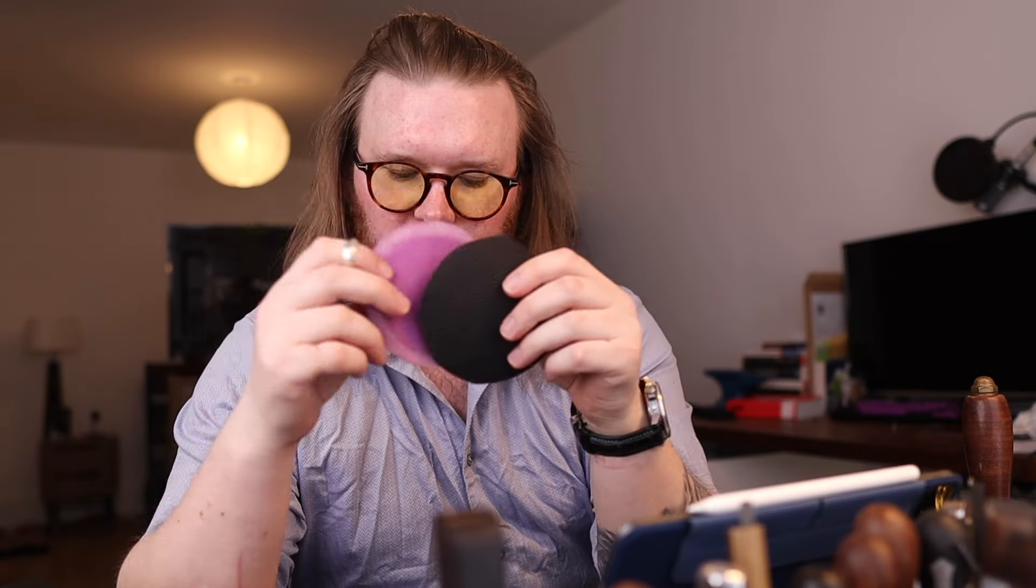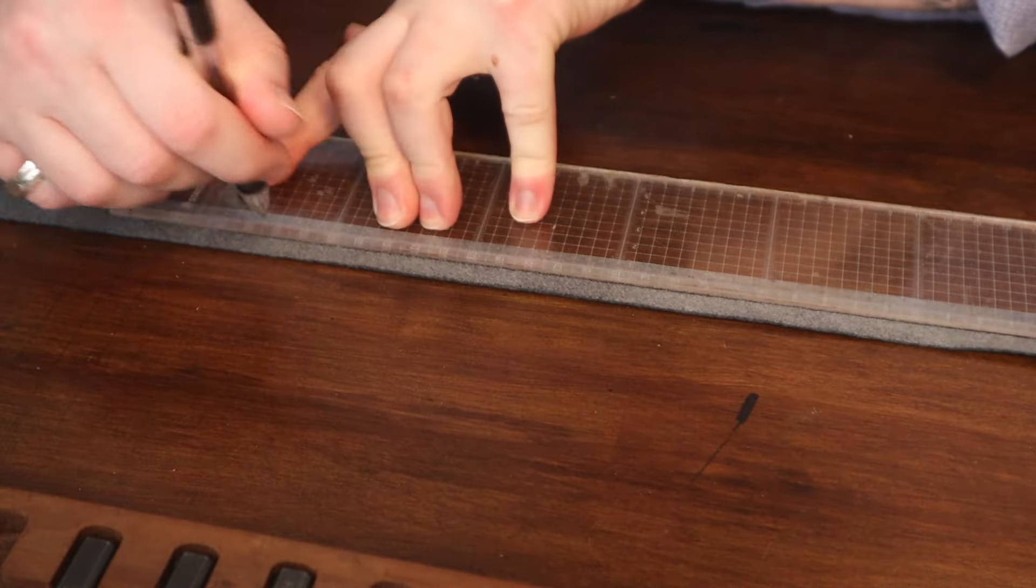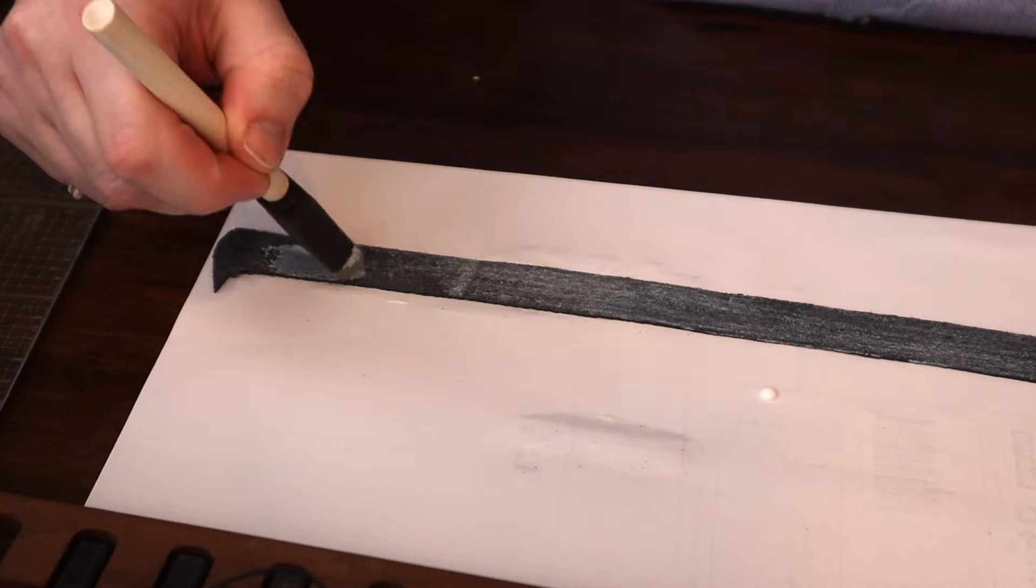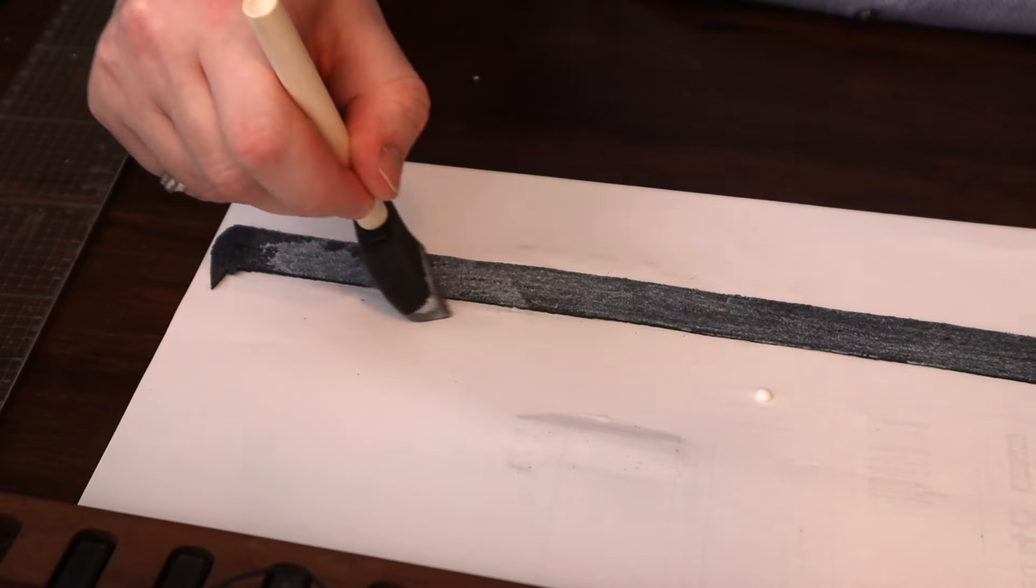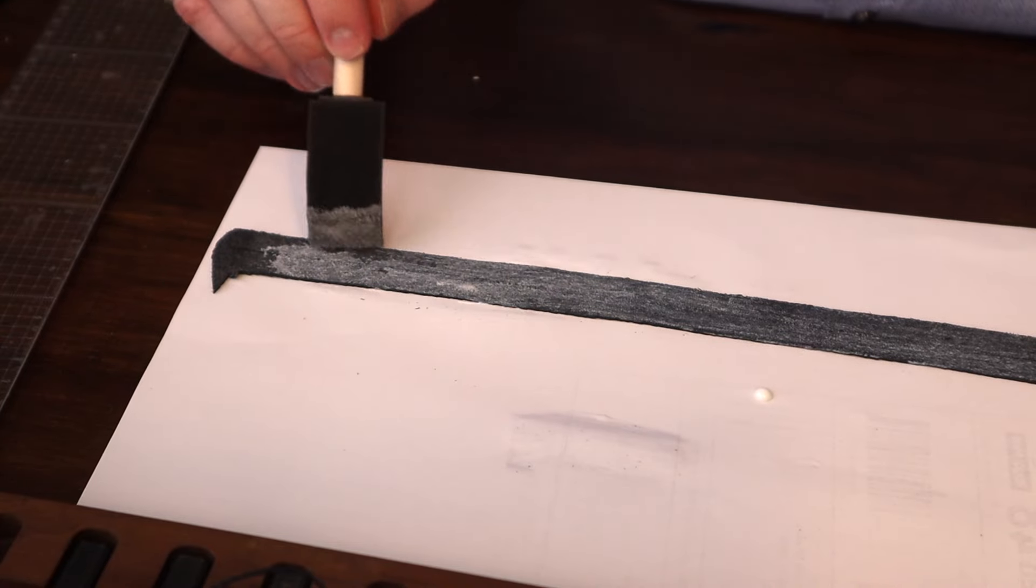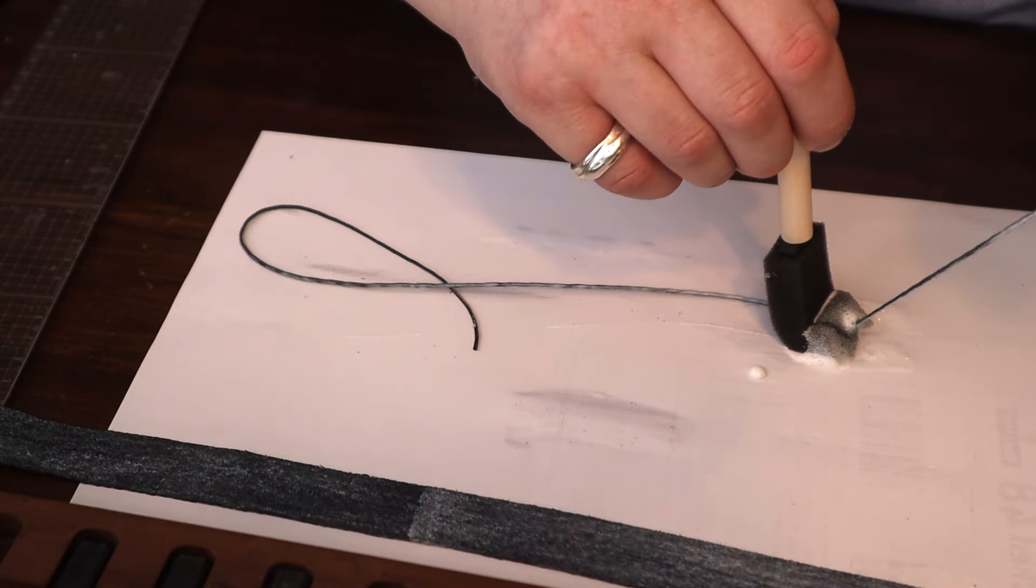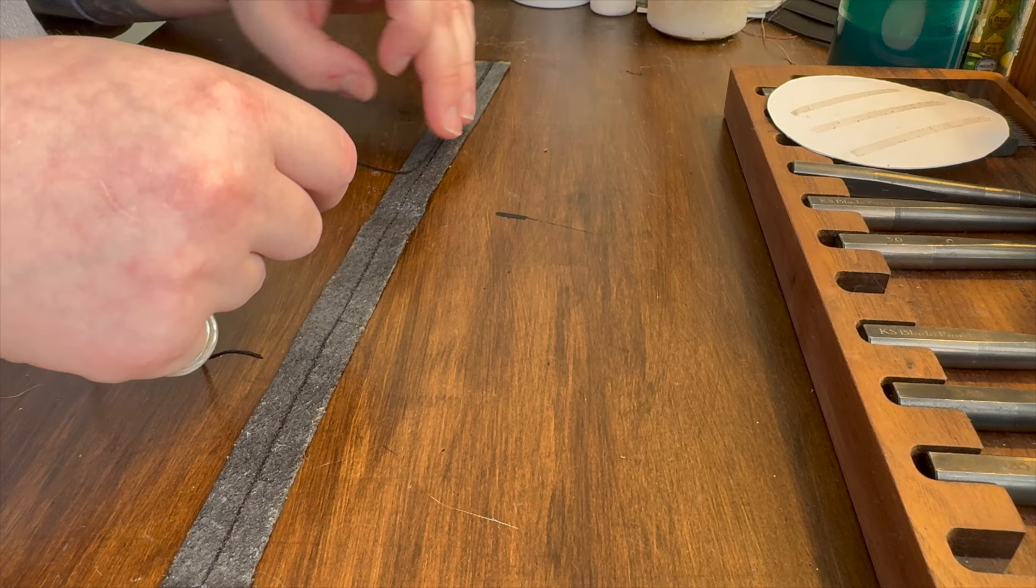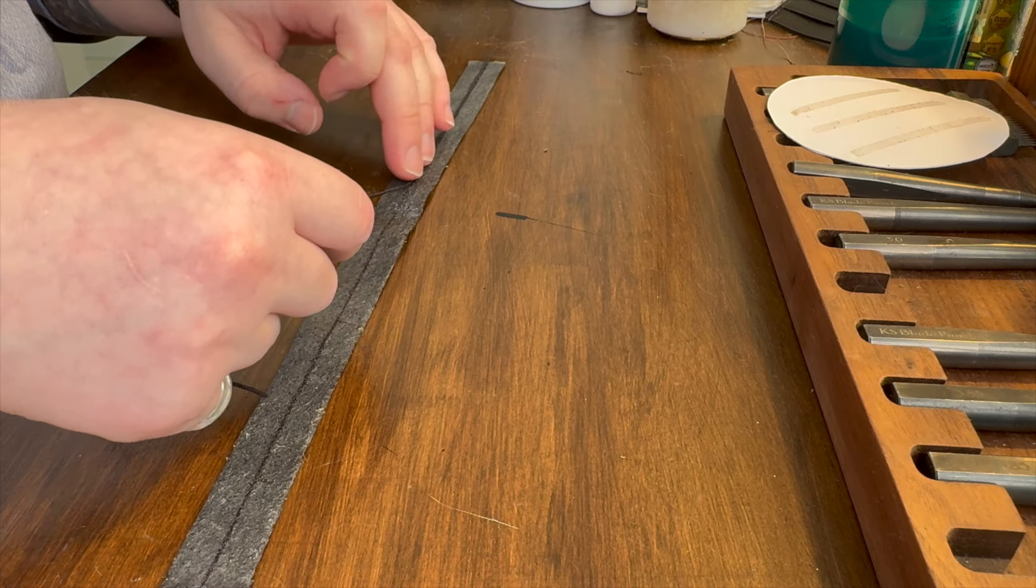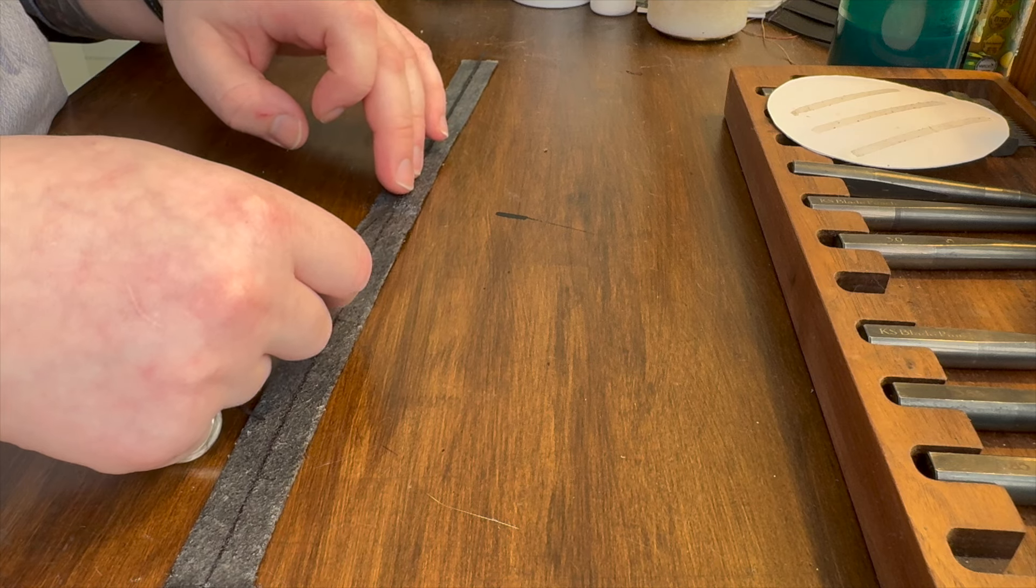When skiving the exterior of the bag or whatever you're making, you're going to flat skive the edge down to 0.8 mm. For the interior of the bag, the pink leather in this case, you're going to flat skive the edge 10 millimeters in. When you're flat skiving the interior piece you want to go down to 0.6 mm. So the exterior is going to be 0.8, interior is going to be 0.6.